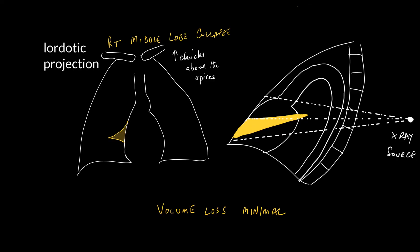The reason for this is that in the lordotic projection, the clavicles are projected above the apices, and at some point the x-ray beam is tangential to the interface, and then you tend to see it on the PA chest x-ray. Middle lobe collapse is often produced by inflammatory pathology or mucus plugging, and do note that volume loss is very minimal with middle lobe collapse, purely because the middle lobe does not carry that much volume.